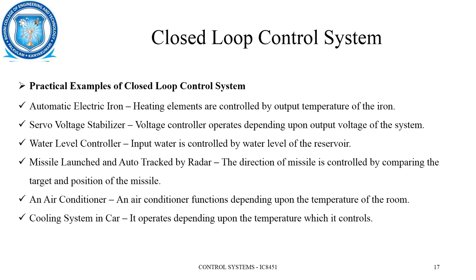For closed loop control systems, examples include the automatic electric iron, which senses heat and ensures temperature does not go beyond a particular level. The servo voltage stabilizer is used for voltage regulation — voltage should not exceed a high level or fall below a low level. For a water level controller, if the water in the reservoir reaches a low level, a pumping system is automatically activated. When the reservoir reaches its maximum limit, the controller stops the pumping system and water inflow stops — acting as a closed loop system.